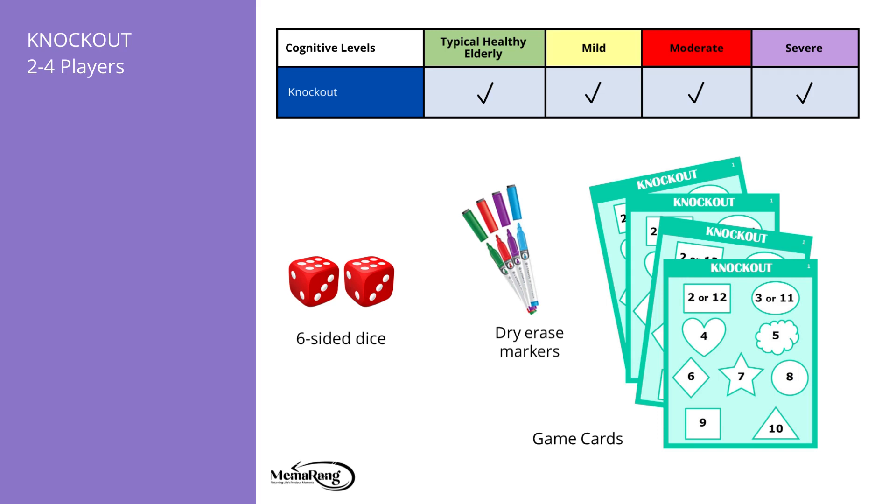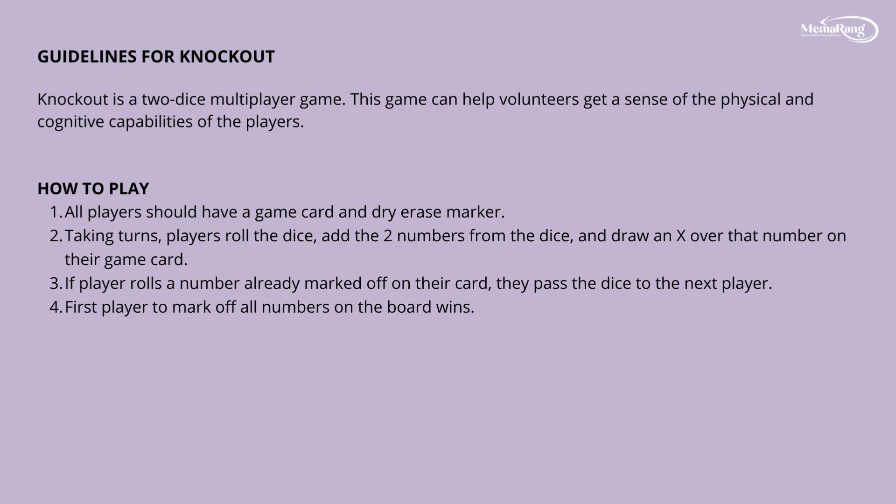You do get four player cards, dry erase markers, and six-sided die. All are needed for the game. Here are the guidelines for Knockout.